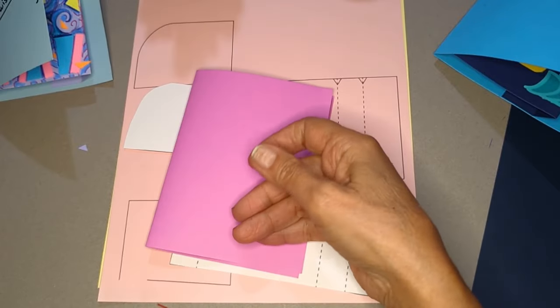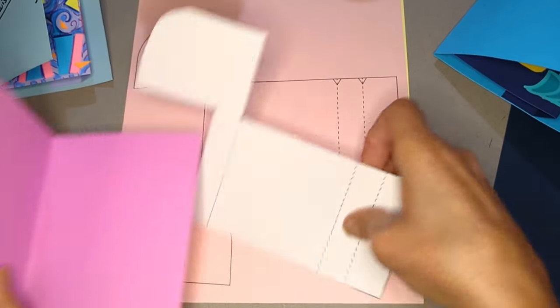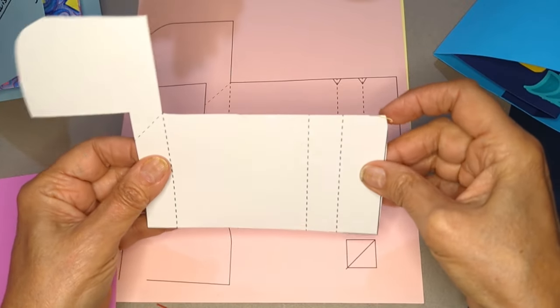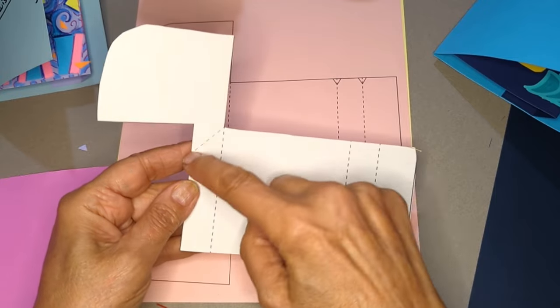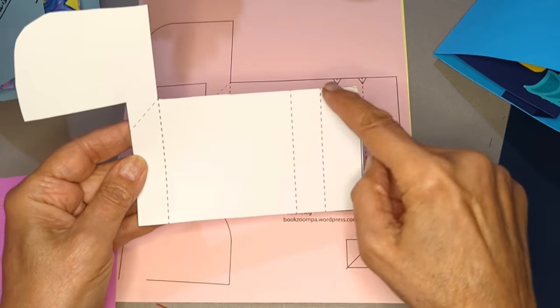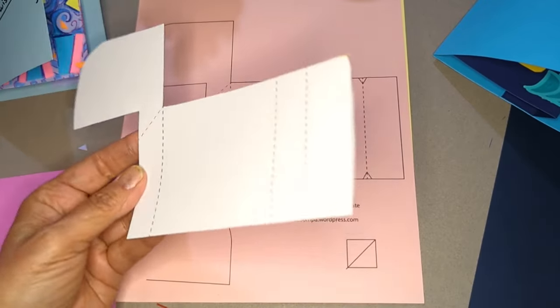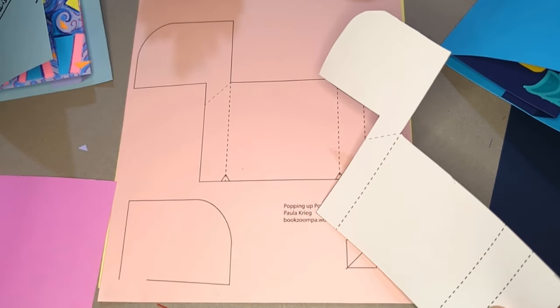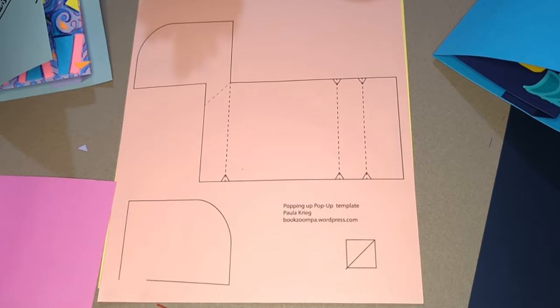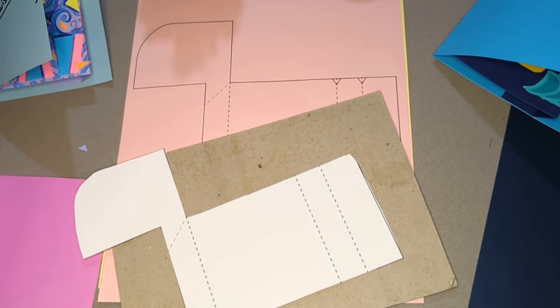Okay so after I cut it out I want to make score lines on the dotted lines. The score lines I hope you know are the fold lines and I'll put this on a soft surface.